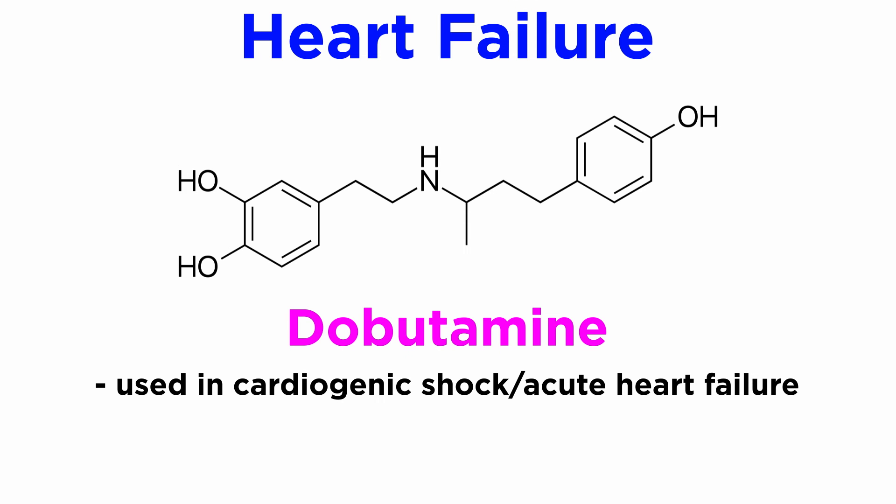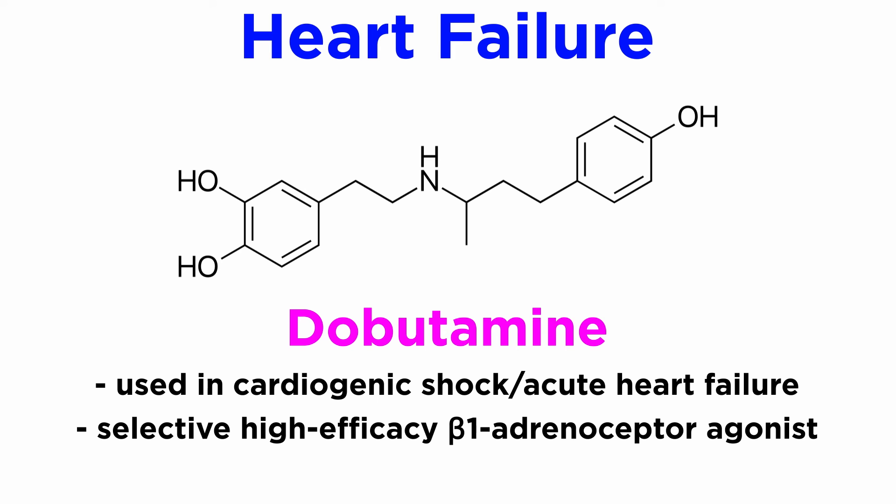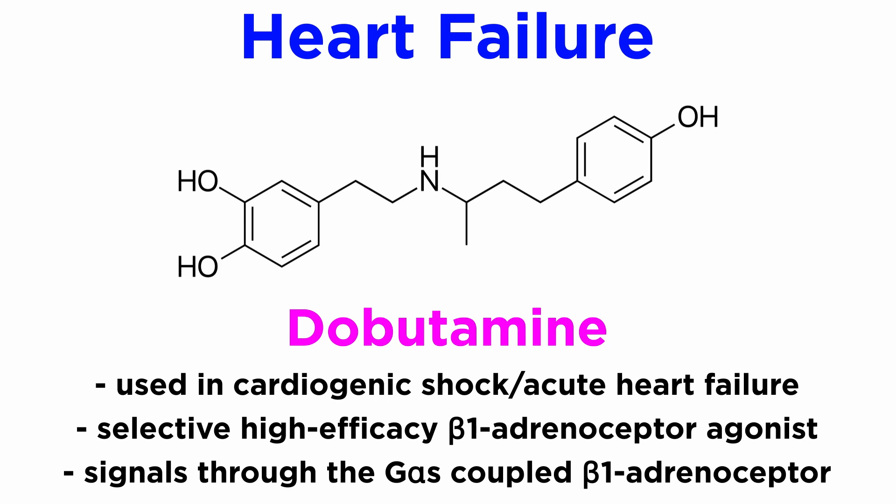Dobutamine is often used in cardiogenic shock and severe acute heart failure. It is a somewhat selective, high-efficacy agonist for beta-1 adrenoceptors, and signals through the G-alpha-S coupled beta-1 adrenoceptor via the mechanisms discussed earlier to cause both increased heart rate and contractility.